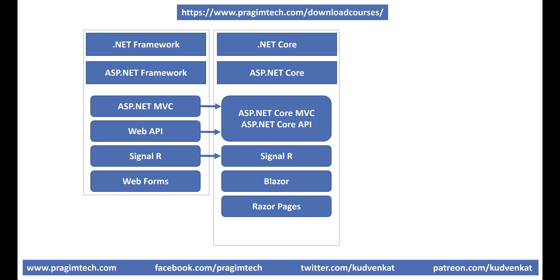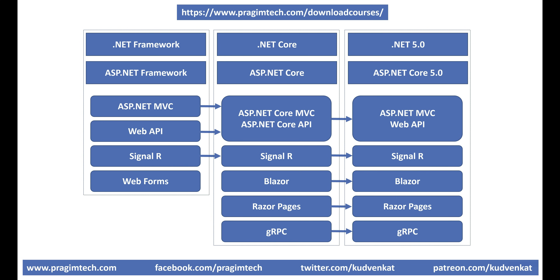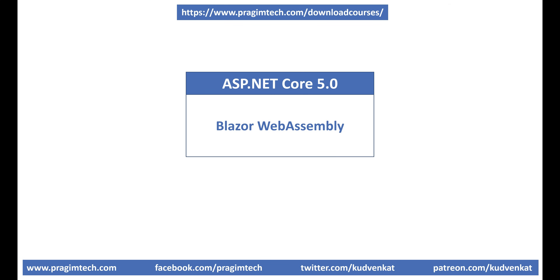In .NET Core, we also have support for gRPC. .NET 5 has everything that we had in .NET Core, plus many new features and capabilities. In ASP.NET Core 5, Blazor WebAssembly in particular received many enhancements and capabilities from both a features and performance standpoint. In our upcoming videos in this series, we will build a real-world data-driven Blazor WebAssembly project from scratch.